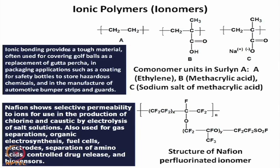Ionic bonding provides a tough material because intermolecular ionic bonds form through these ionizable sites, increasing toughness. The material is often used for covering golf balls as a replacement of gutta-percha, which is a naturally occurring polymer with trans configuration in contrast to cis natural rubber. These ionomers are also used in packaging applications as coating for safety bottles to store hazardous chemicals, and in the manufacture of automotive bumper strips and guards.